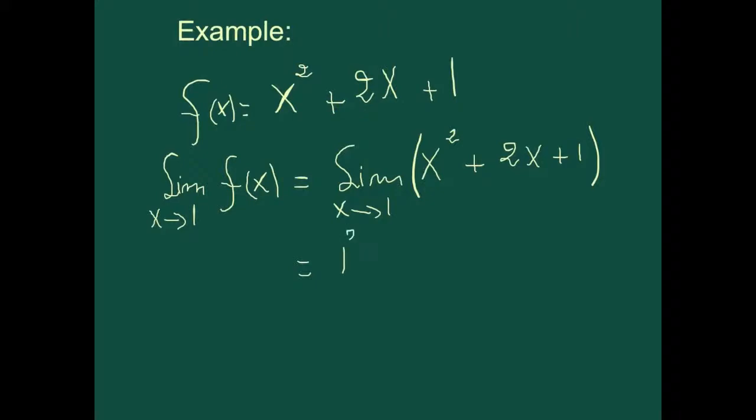So our limit will go to 1 squared plus 2 times 1 plus 1, which is 1 plus 2 plus 1, which is 4. So that should be the answer to this example.